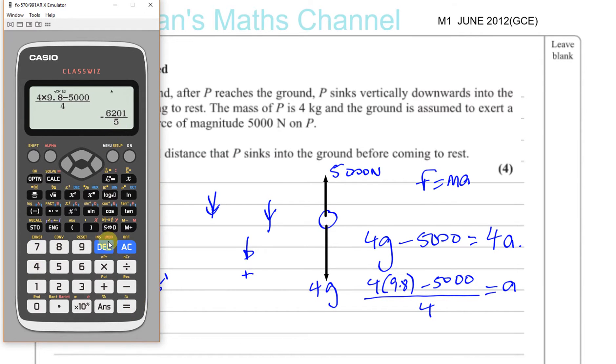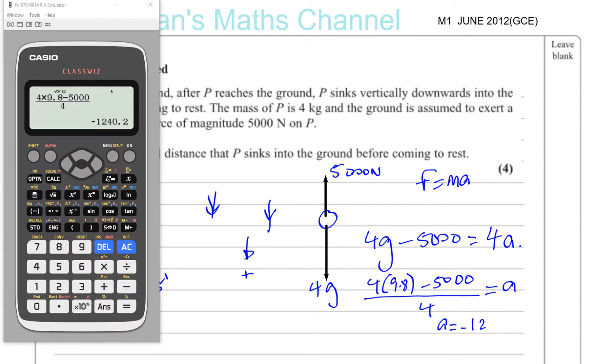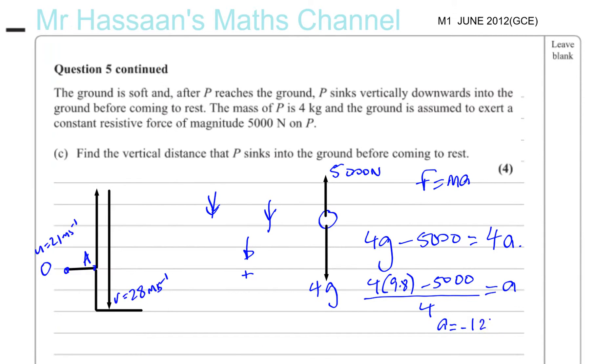Now, that should give us a negative value, and it does. It's minus 1,240.2. So, acceleration, it's very big, actually. Minus 1,240.2 meters per second squared. That's acceleration of the particle.